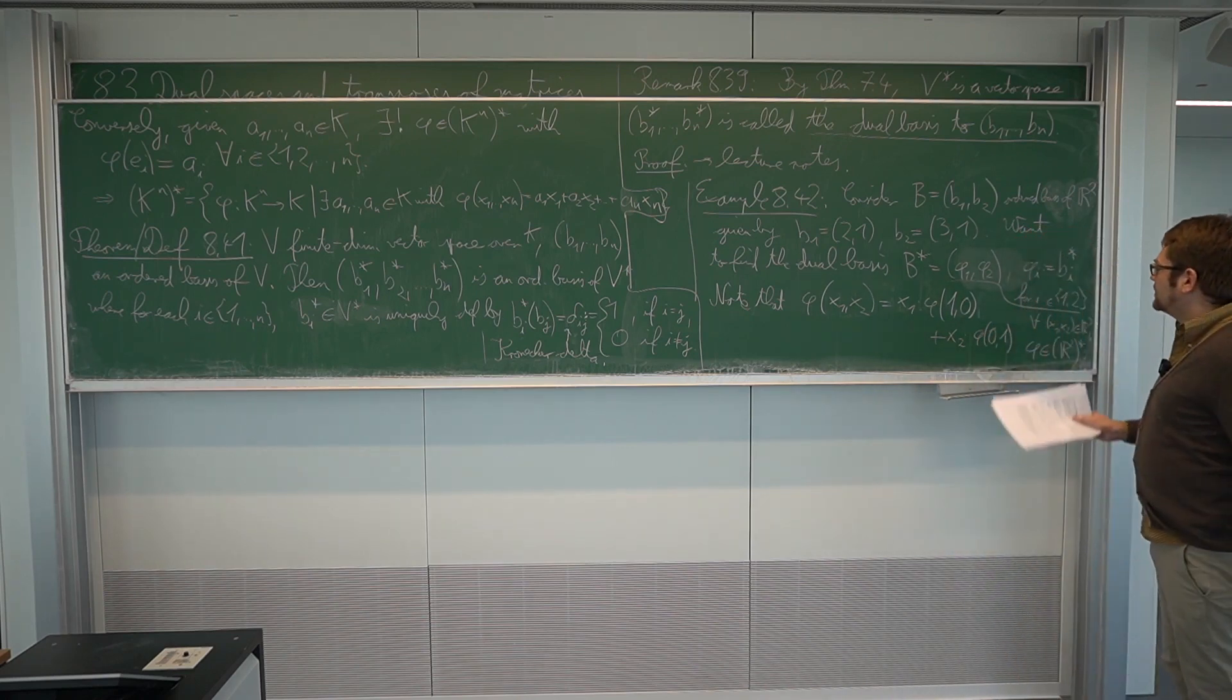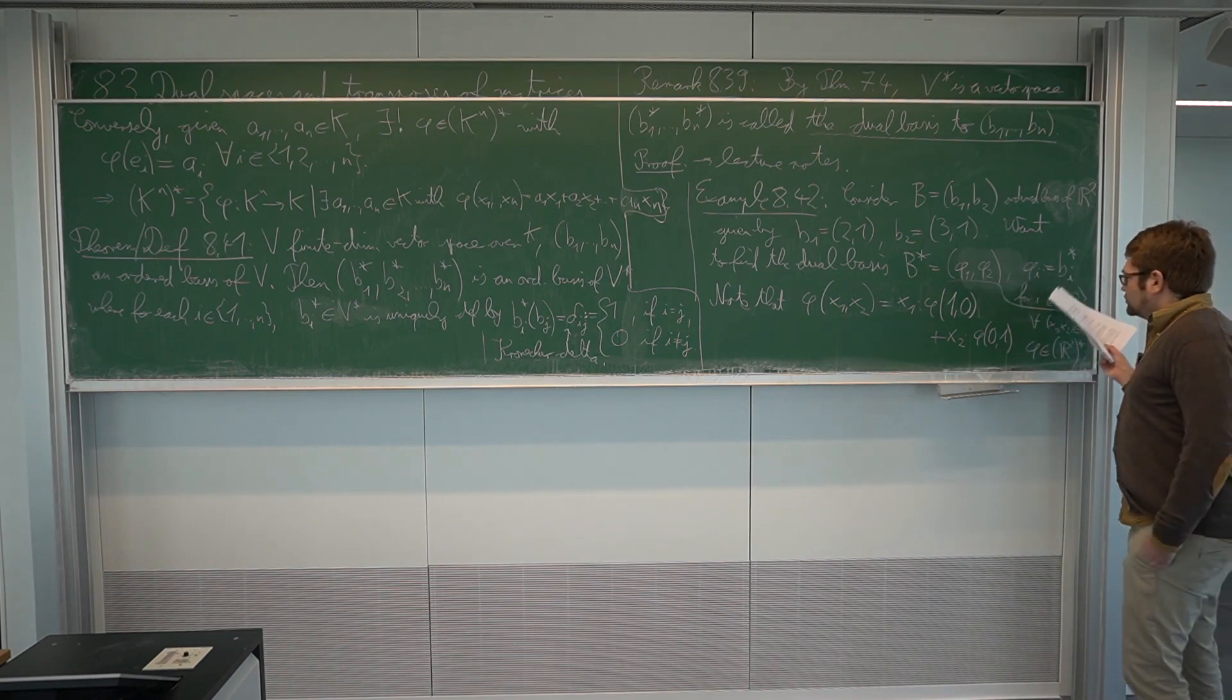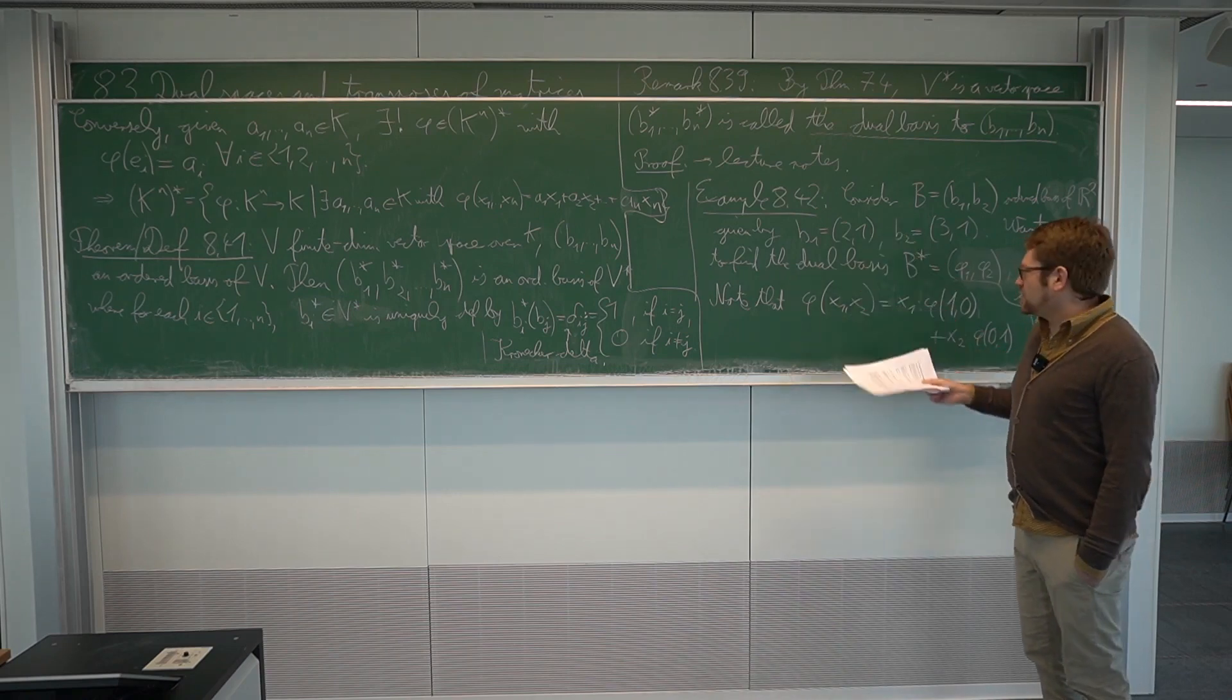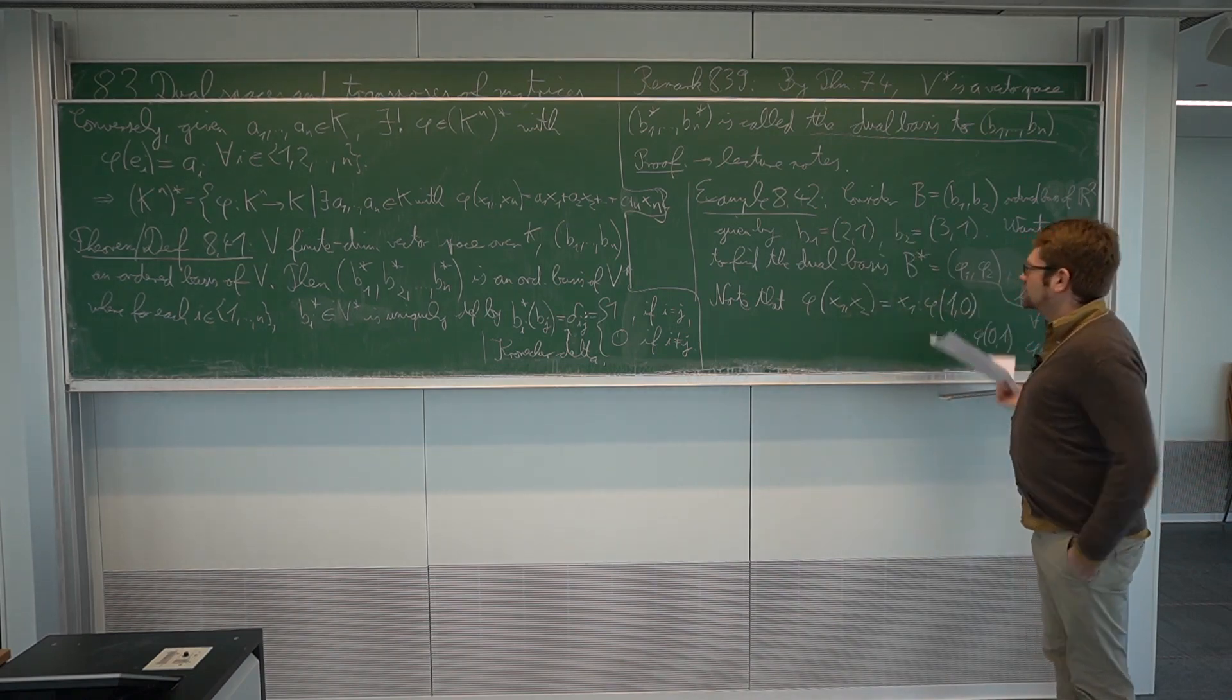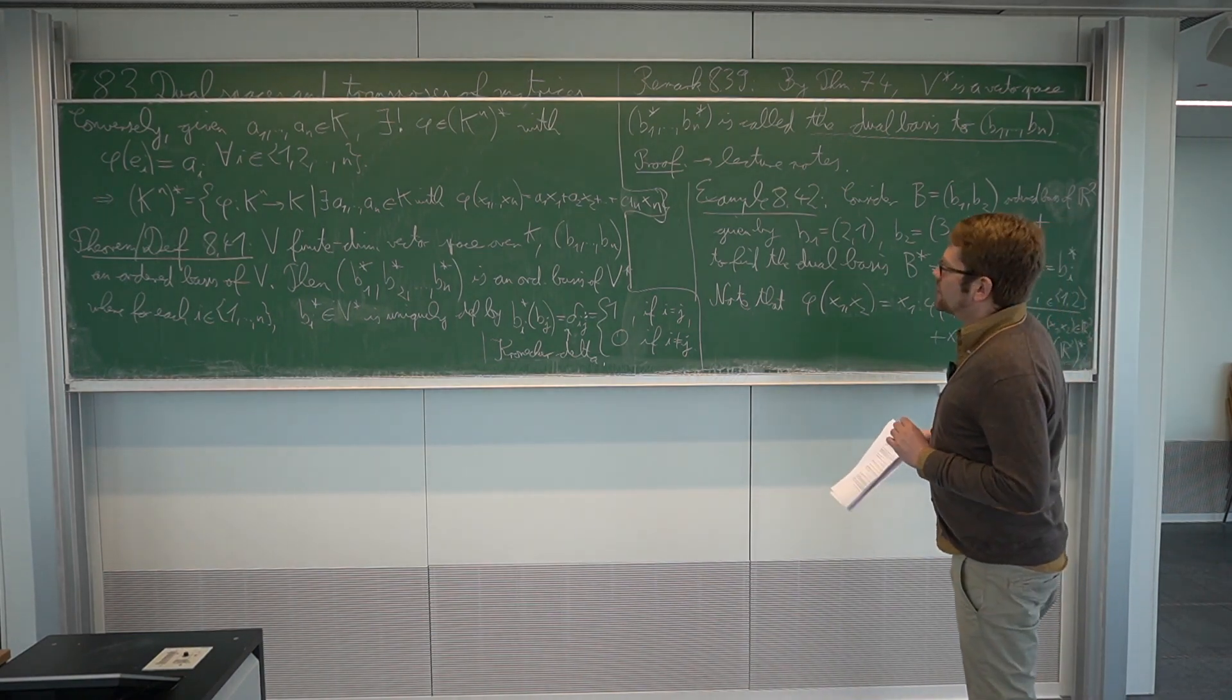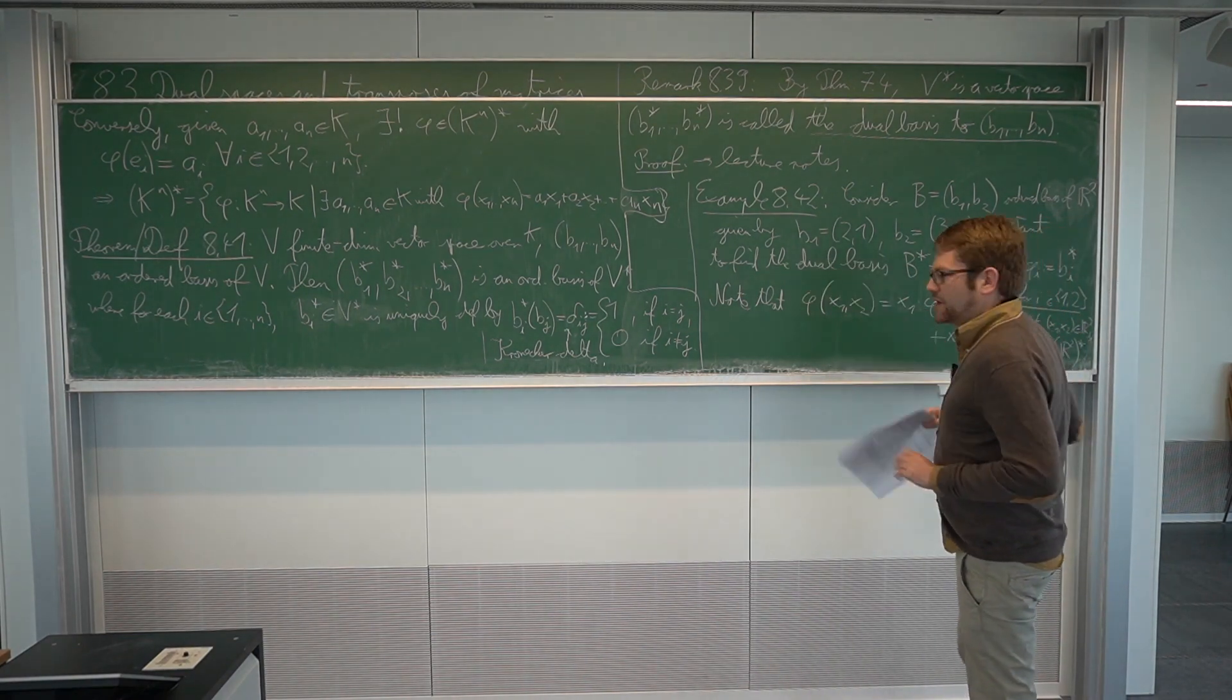What we need to do is to find, the dual basis vectors are defined by the properties what they do on these two vectors, then we have to check what they do on the canonical base vectors, and then compute the numbers and see what happens.